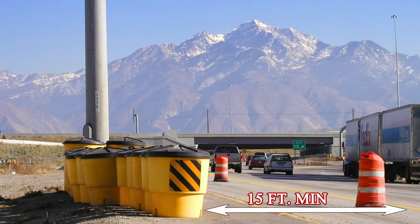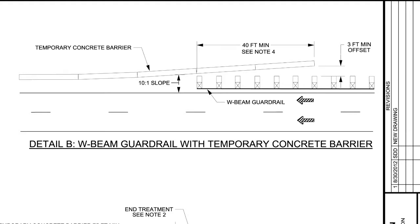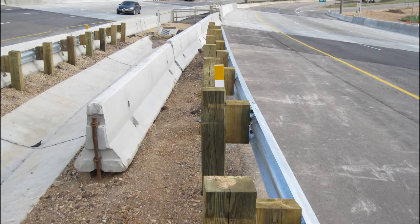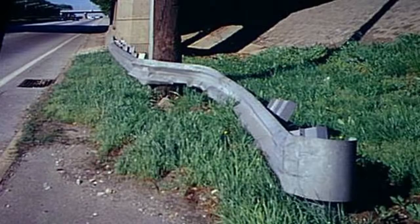The unprotected barrier end is placed within the astral clear zone, creating a blunt end hazard for the travelling public. How would you provide positive protection in this case? Standard Drawing TC18 Detail B provides the solution. The detail requires a minimum of 40 feet of concrete barrier placed behind the existing W-beam guardrail. You need to make sure that the concrete barrier end is placed at a minimum of 3 feet behind the guardrail, measured from the back of the guardrail post to the face of the concrete barrier. This 3-foot distance will provide for the deflection of W-beam rail during an impact from an errant vehicle.